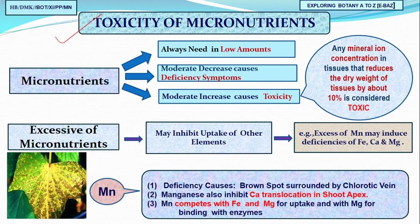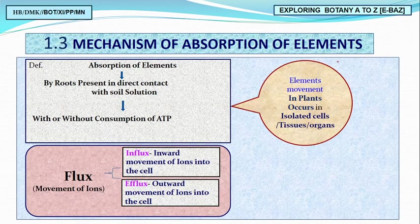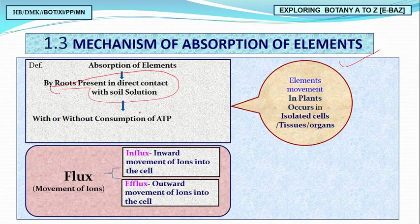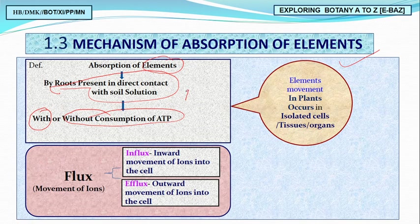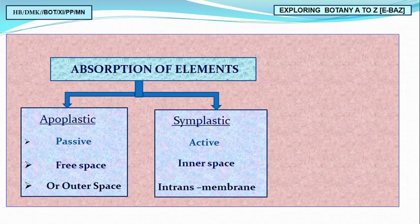In the second lecture, we studied toxicity of micronutrients — excess manganese induces deficiency of Ca, K, Mg. We studied different types of micro and macronutrients. We studied the mechanism of absorption of elements: with ATP (active process) or without ATP (passive process). Influx means getting inside the cell; efflux means outside. Passive absorption uses the apoplast or symplast pathways.